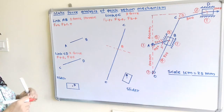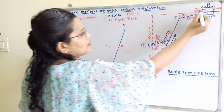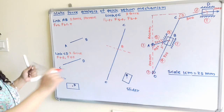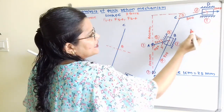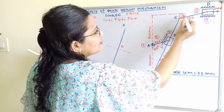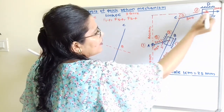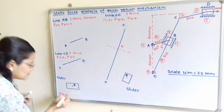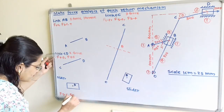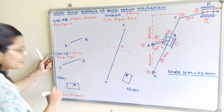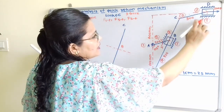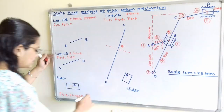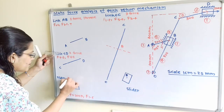For slider at point D, which is link number 6: at point D the force transferred from link 5 is F of 5 to 6. There is also a force of 300 N. Because of the motion of the slider along the horizontal line with the fixed surface (link 1), the force is F of 1 to 6. So slider at D is a three-force member.